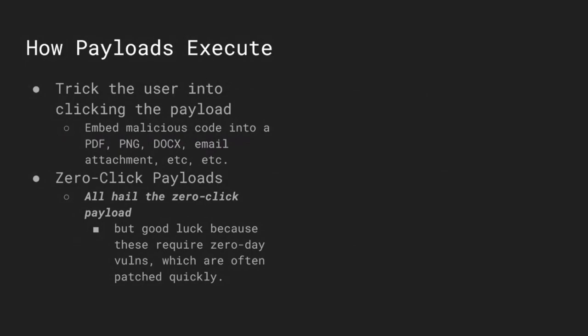Payloads are executed by tricking the user into clicking the payload, such as embedded malicious code in a PDF, PNG, doc file, or email attachment. They can be further distinguished into zero-click payloads and user-executed payloads. Payloads mostly consist of shell code, which is a special type of code injected remotely or locally that lets hackers exploit a variety of software vulnerabilities. It is named shell code because it typically spawns a command shell from which attackers can take control of the affected system. You will not likely notice shell code until you notice an attack on your computer.